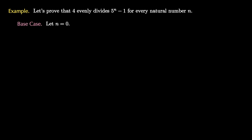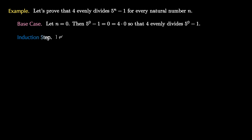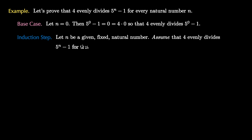For our base case, we let n equal 0, the smallest natural number. We check that 5 to the 0 minus 1 is 0, which is 4 times 0, and since 0 is an integer, 4 evenly divides 5 to the 0 minus 1. For the induction step, we let n be a given fixed natural number greater than or equal to 0. We make the major assumption that 4 evenly divides 5 to the n minus 1 for this value of n, meaning 5 to the n minus 1 equals 4 times k, where k is some integer.